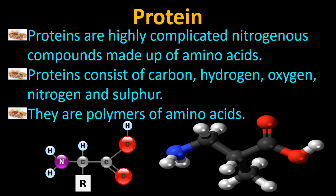Proteins consist of carbon, hydrogen, oxygen, nitrogen, and sulfur. So they are polymers of amino acids. The word 'polymers' means that many amino acids join together to give protein.